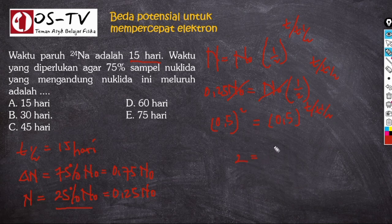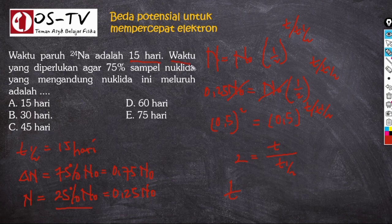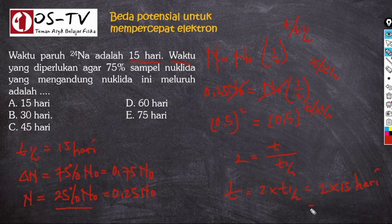Dengan demikian T = 2 × T½ = 2 × 15 hari = 30 hari. Jawaban dari soal ini adalah B.